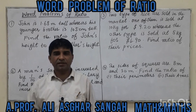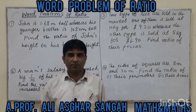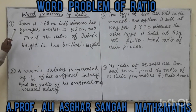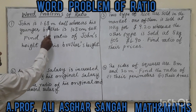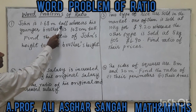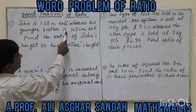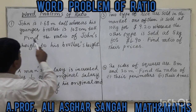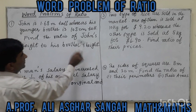In this lecture we may see ratio word problems. Problem number 1: John is 1.68 meters tall, whereas his younger brother is 105 centimeters tall. Find the ratio of John's height to his brother's height.